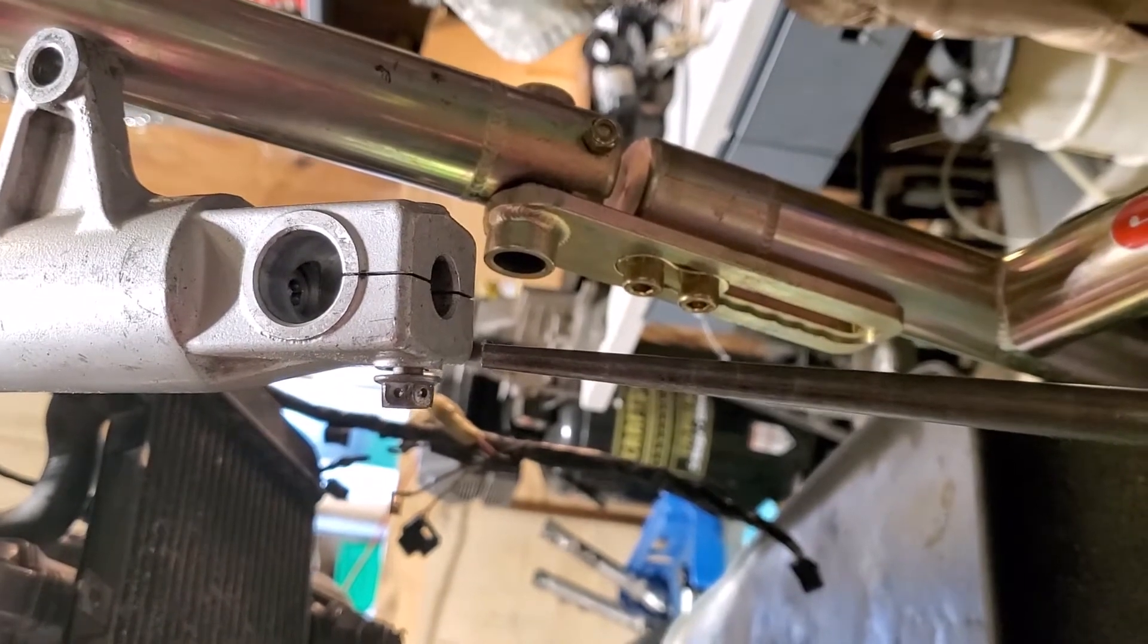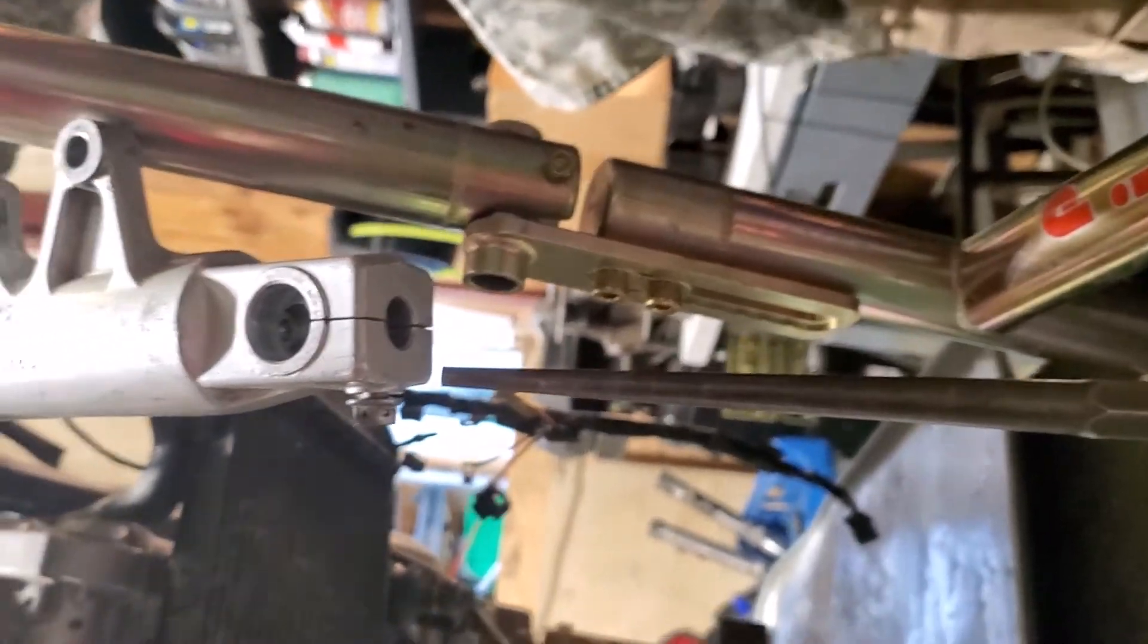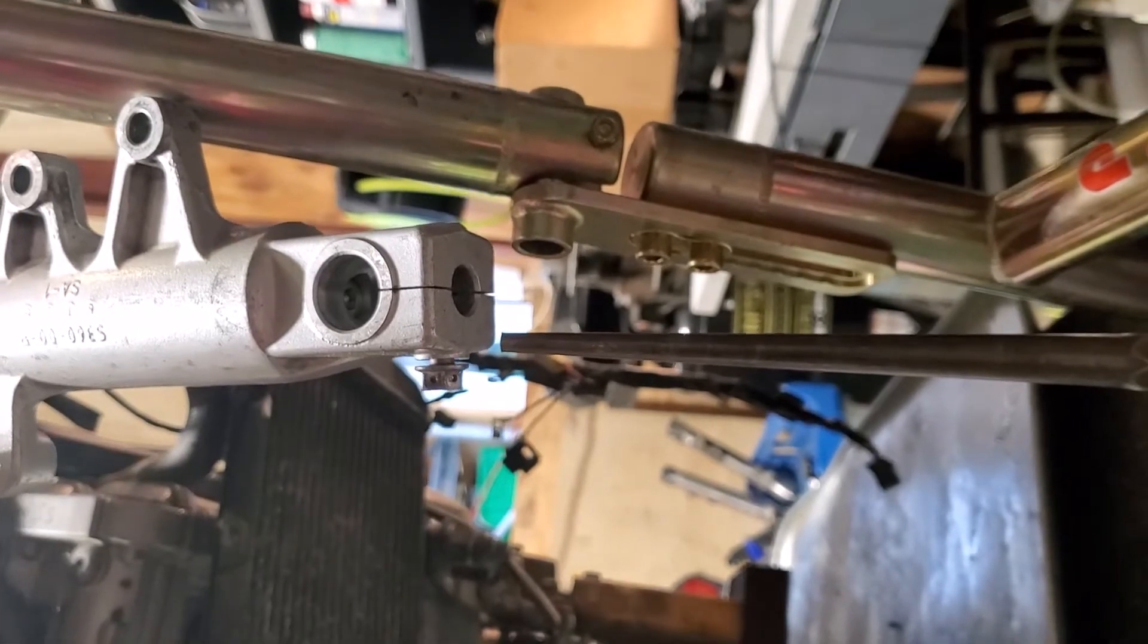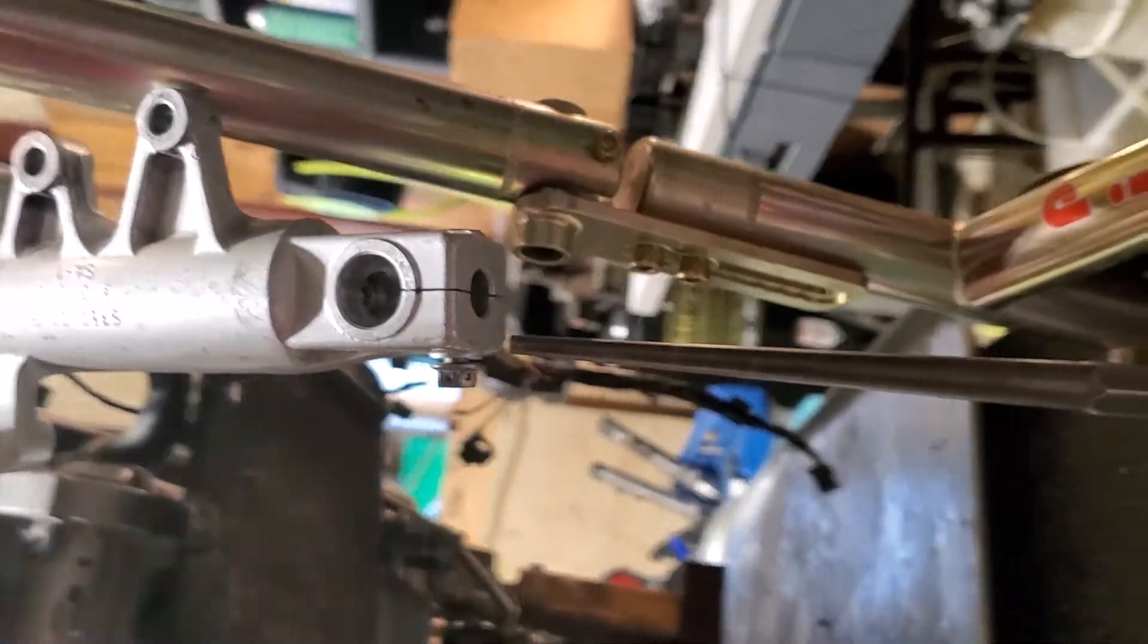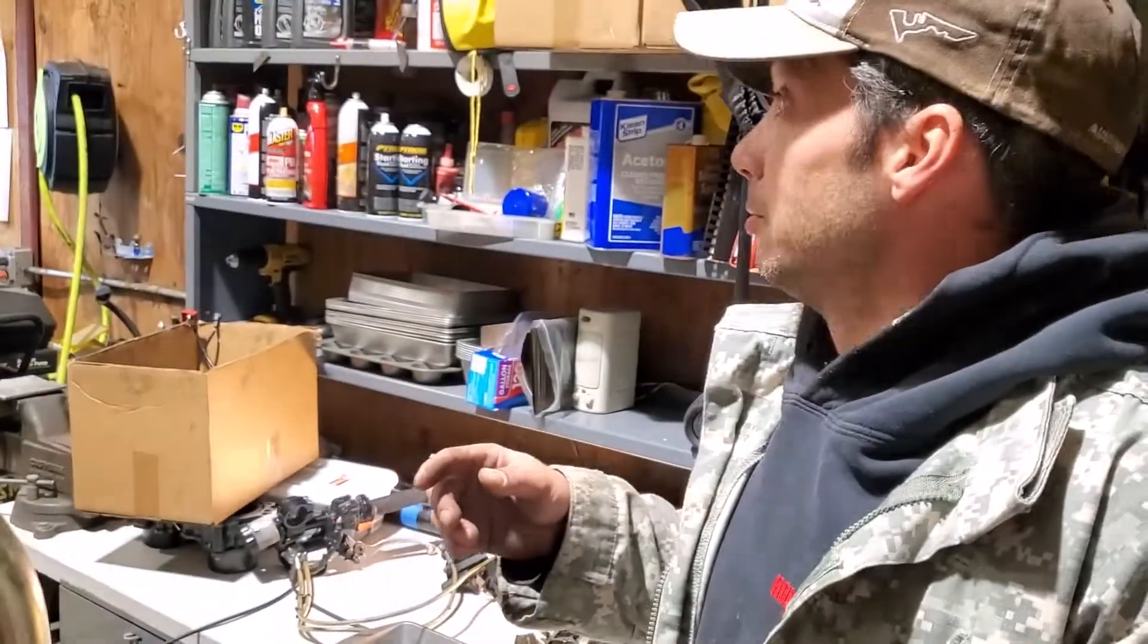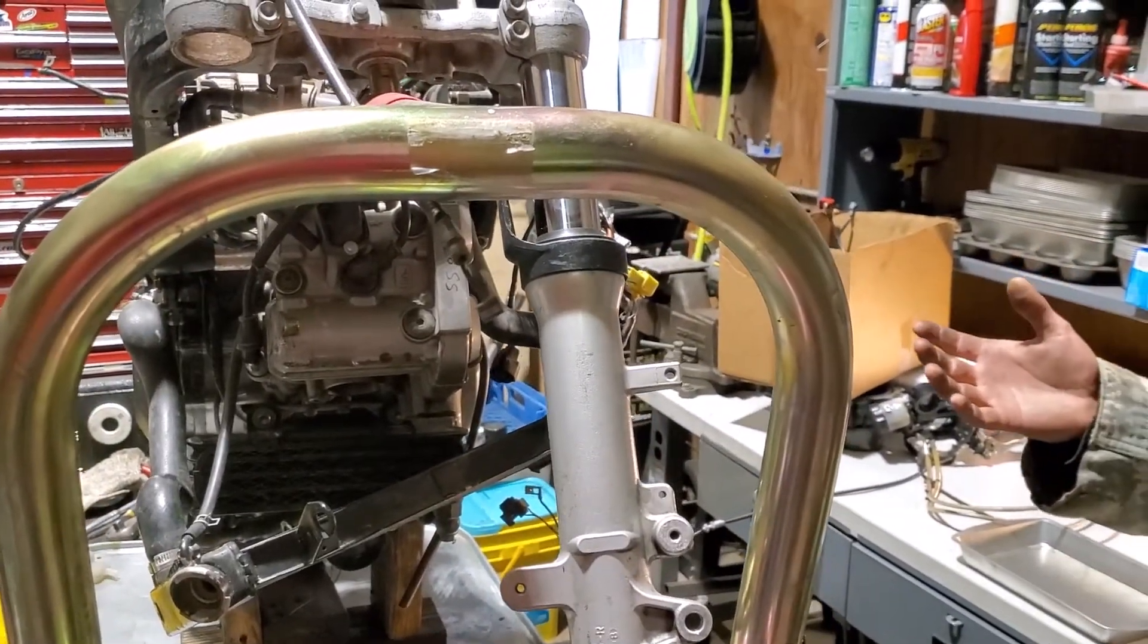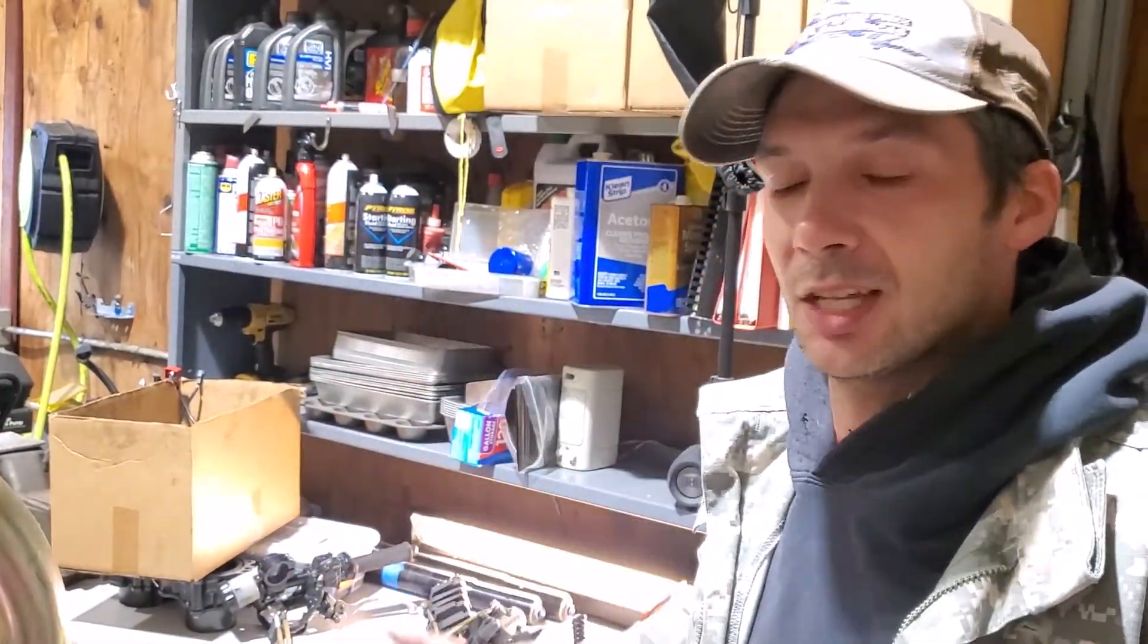Now this won't be the most precise thing obviously but it will give you at least a pretty good idea if your fork is a complete mess or close enough. I mean if it's eyeball straight I would probably run it for street. For track days or higher performance riding I would probably stick to using a real tool. So yeah that's how you check forks three different ways, those are the three that I've had decent success with.